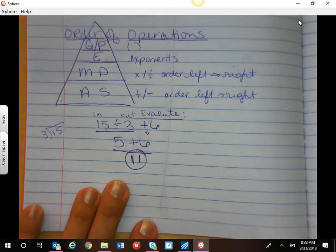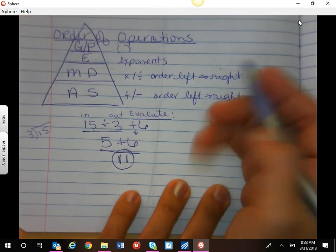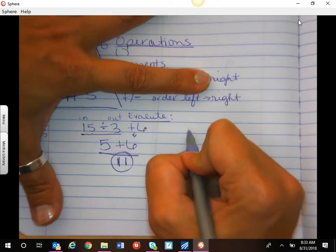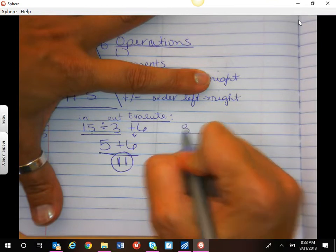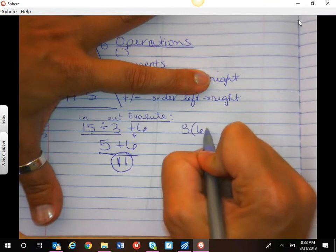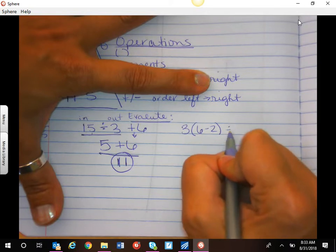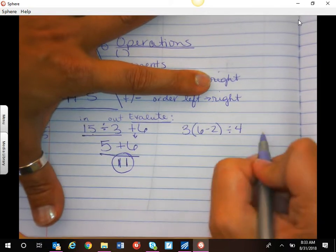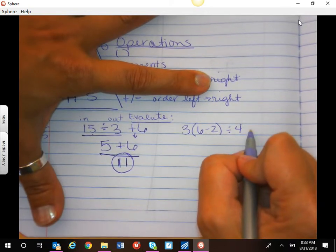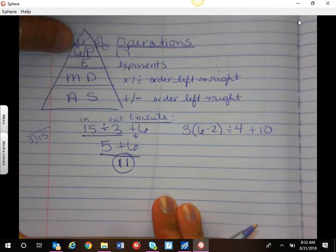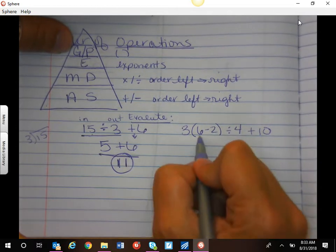I want to give you another example. So let's try, and we'll still evaluate. Let's do 3 parentheses 6 minus 2, close parentheses, divided by 4 plus 10. So here, we have a grouping. We have a parentheses. So we need to do that first.